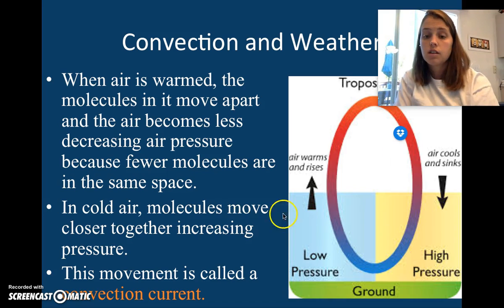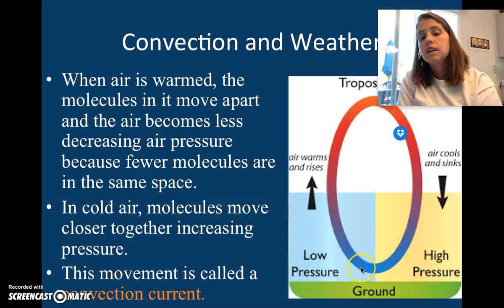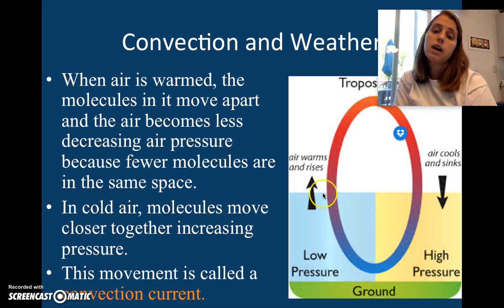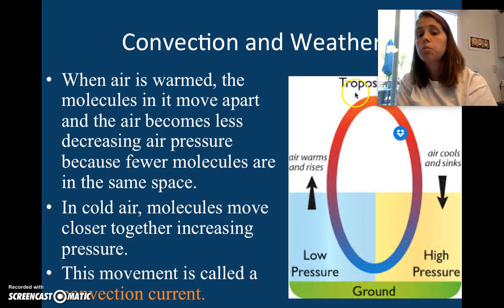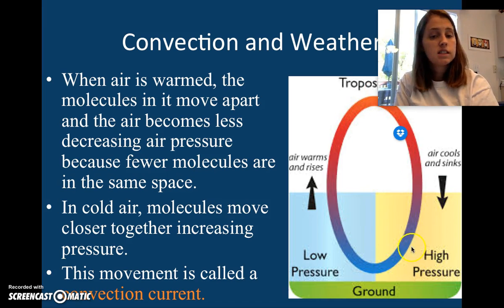And then it is heated up by the ground. As it heats up, it becomes less high pressured and more low pressured, and it's going to rise into the troposphere. Then it's going to cool, and then it's going to sink, and it's going to continue doing this. That is called a convection current.